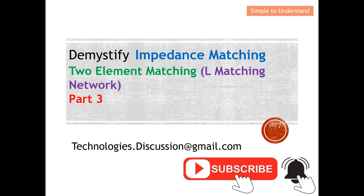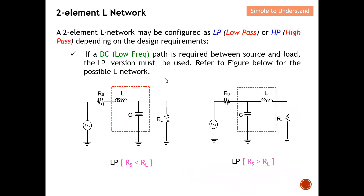Let's start by discussing the two-element L network. Why is it called a two-element L network? As you can see, there are two elements and they actually look like an 'L', so this form is described as a two-element L network.